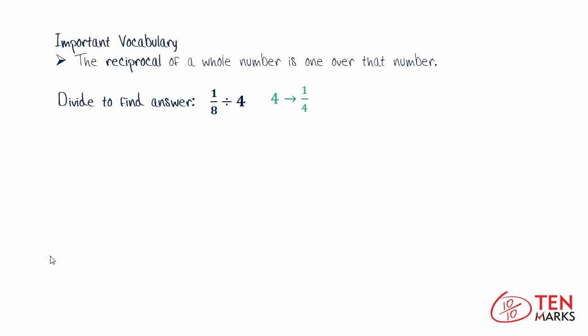First though, you need to know what a reciprocal is. The reciprocal of a whole number is 1 over that number. So in this particular math expression that you're solving, the reciprocal of 4 is 1/4. And you're going to need to know that as I go through the steps.